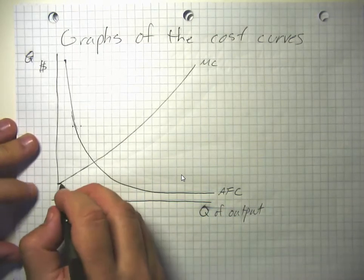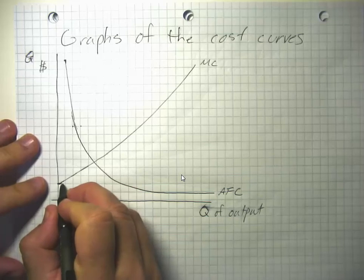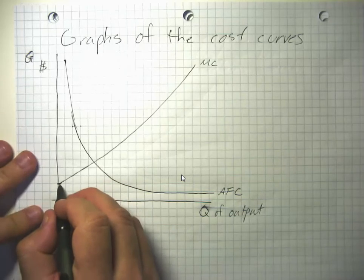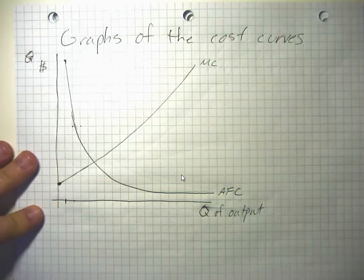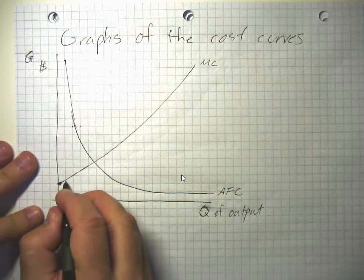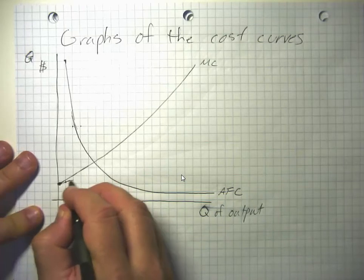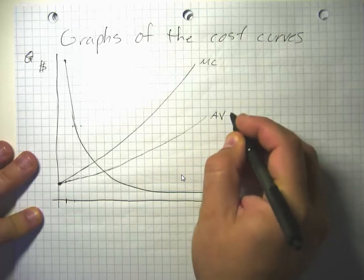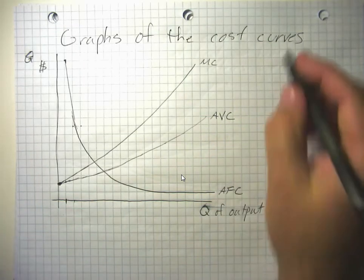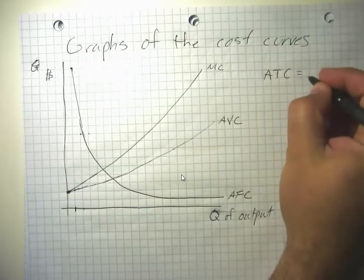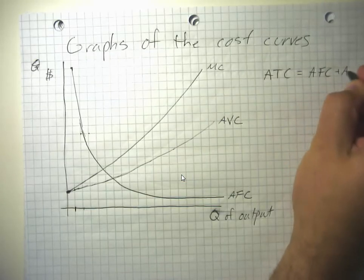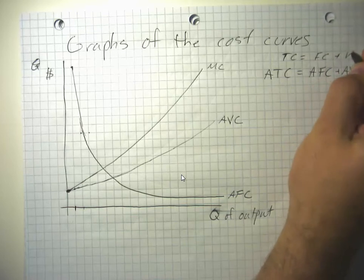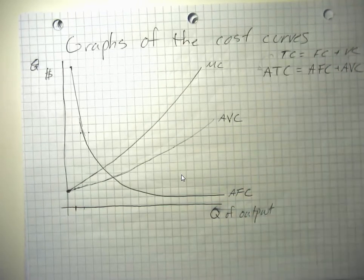We can also think about average variable cost. All of our variable costs are due to our marginal cost — at first they're equal. Then average variable cost becomes the average of all the marginal costs up to that point. And we know that average total cost equals average fixed cost plus average variable cost, since total cost equals fixed cost plus variable cost — this is just an average version of that.